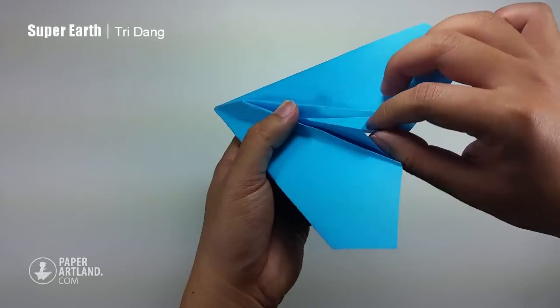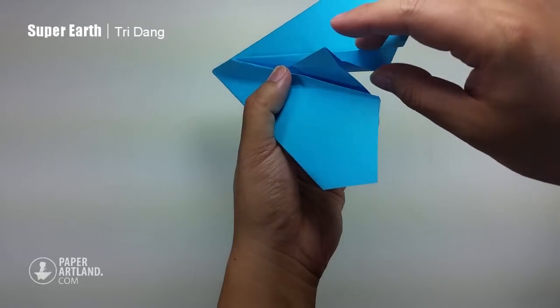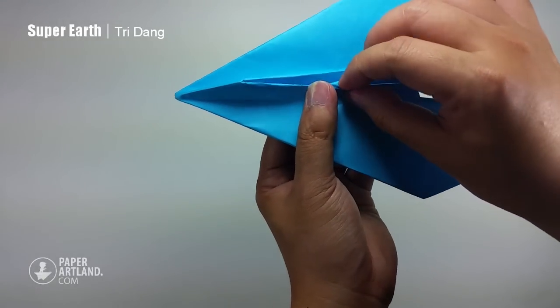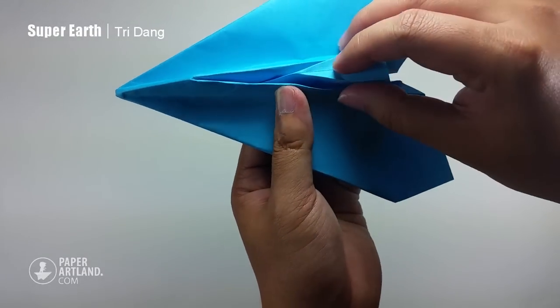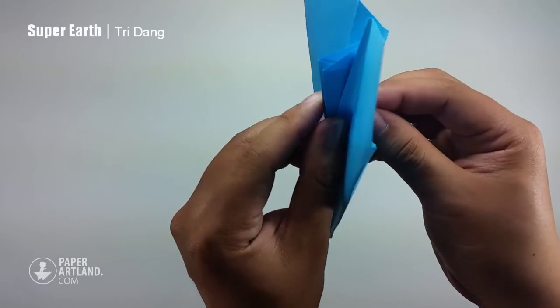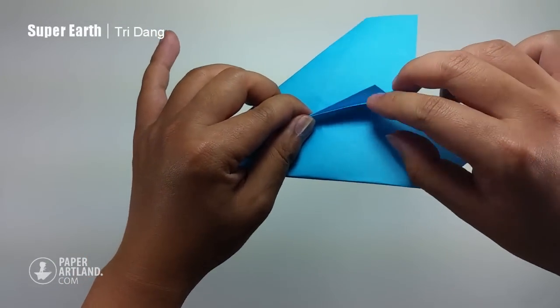And after you fold that part, I can fold the triangle shape here up and just push it down. Sometimes you have to fold more than that a bit. You can see now we have 2 stabilizers in the center.